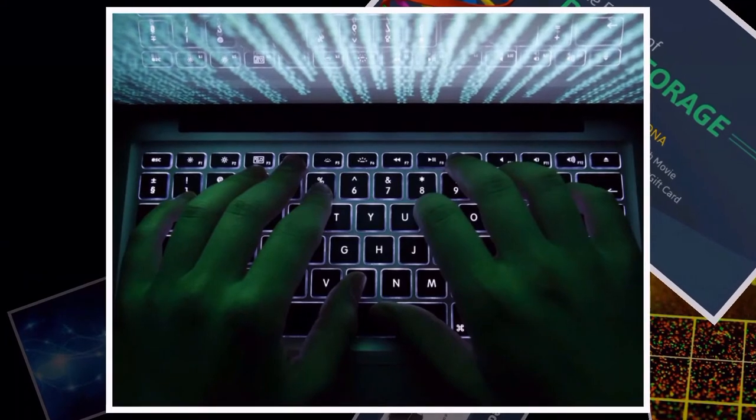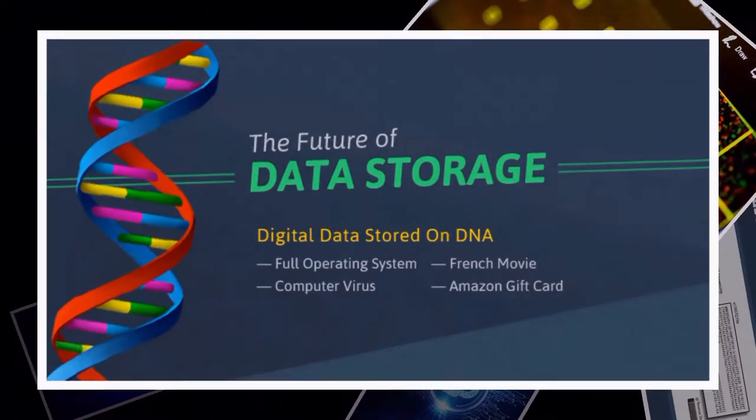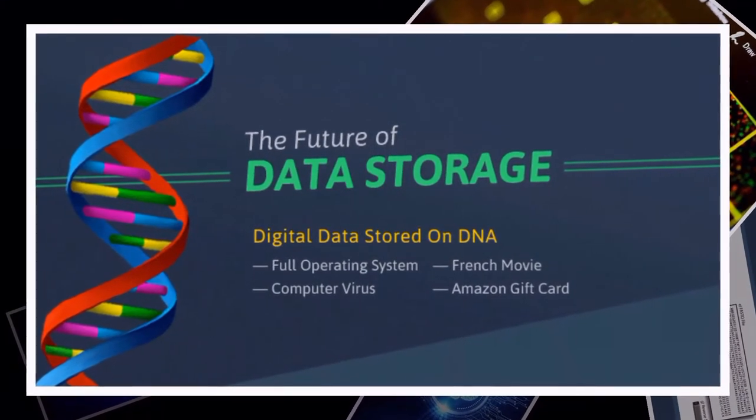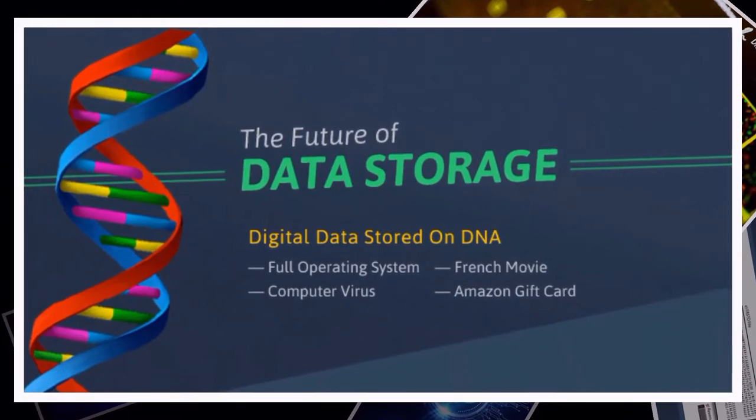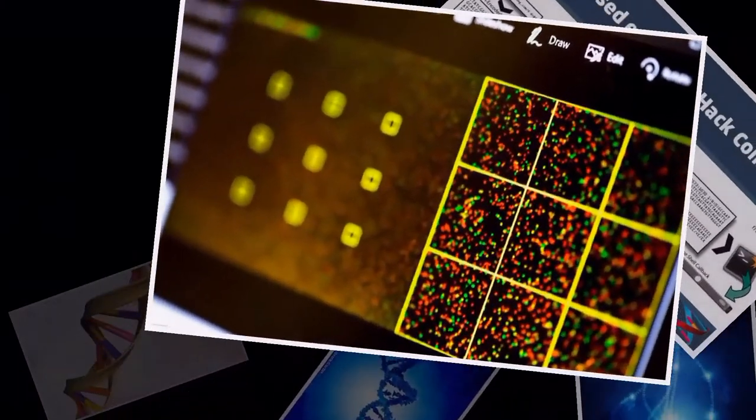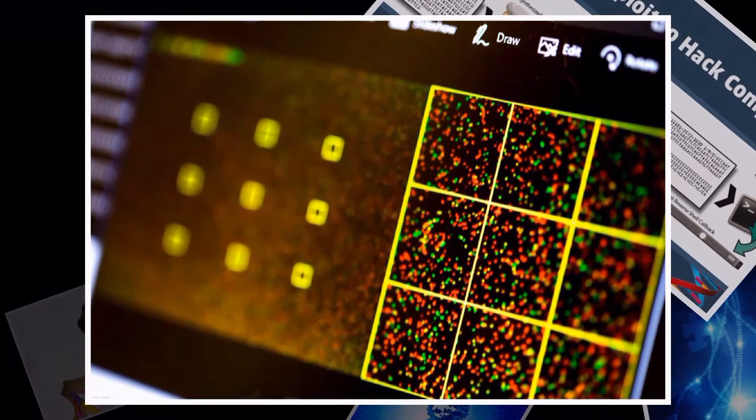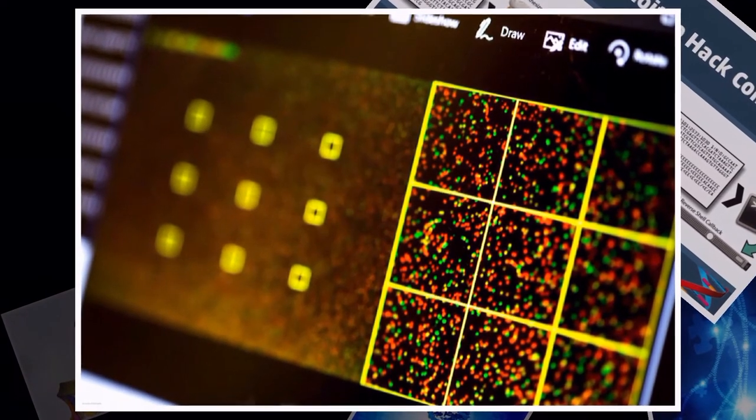The researchers used the four bases in DNA - adenine, cytosine, guanine and thymine, A, C, G and T - to encode the malware, which when read by a piece of DNA sequencing equipment converted the molecular code into computer code capable of taking over the computer connected to the DNA sequencer.